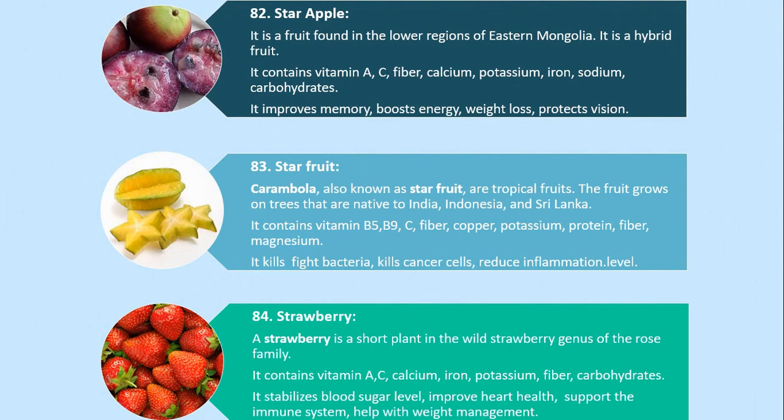Number 82. Star Apple. It is a fruit found in the lower regions of eastern Mongolia. It is a hybrid fruit. It contains vitamin A, C, fiber, calcium, potassium, iron, sodium and carbohydrates. It improves memory, boosts energy, aids weight loss, and protects vision.